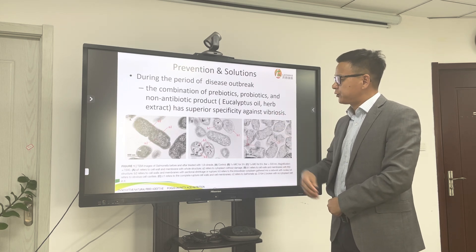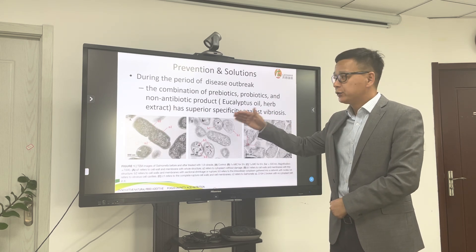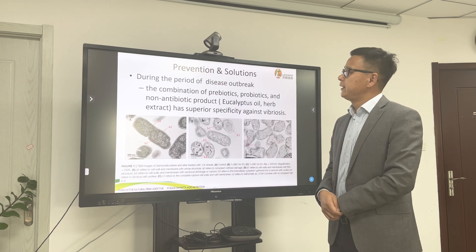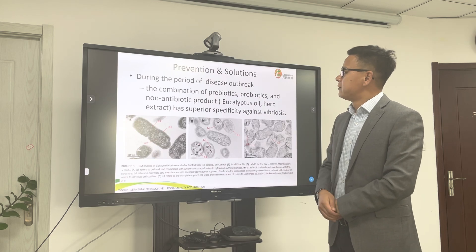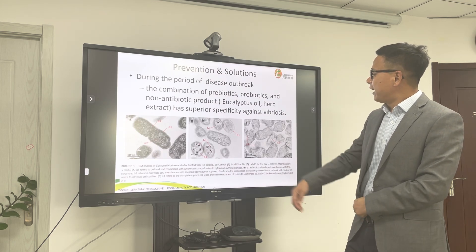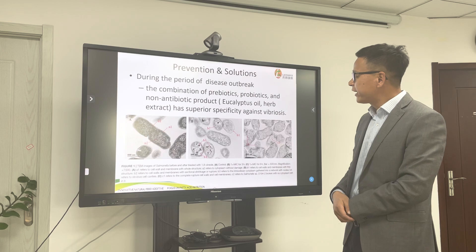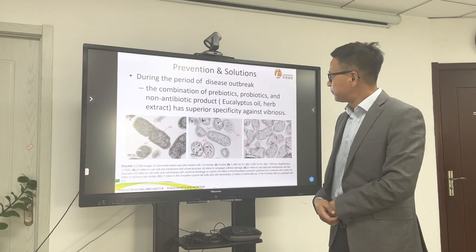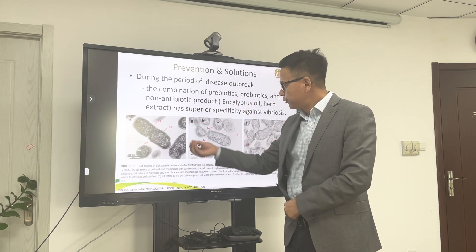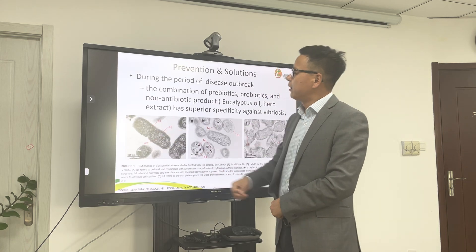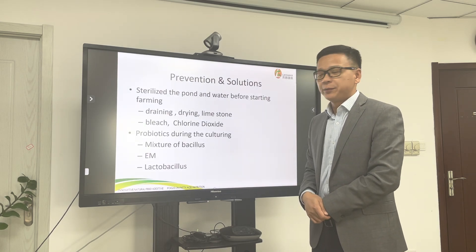Remember, herbal extracts may or may not have toxins. If there are toxins, control the dosage — if overdosed, it will definitely damage the hepatopancreas and affect your shrimp. I strongly advise using UK lactose oil because it has very strong penetration into the membrane of Vibrio and can kill 90% of Vibrio.